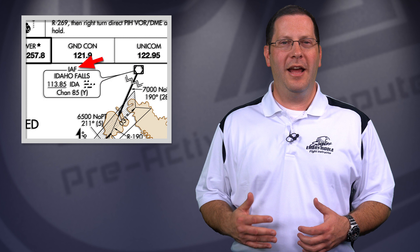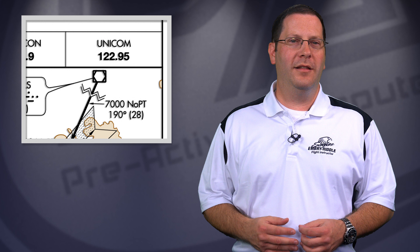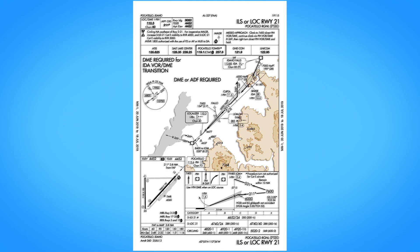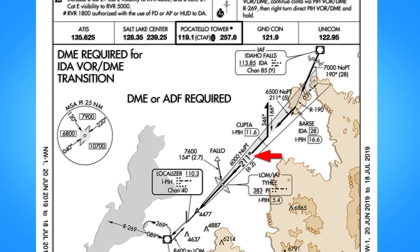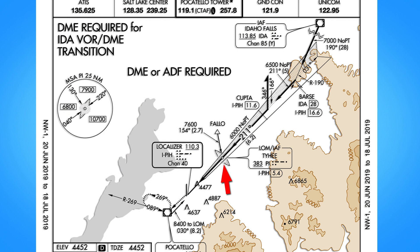Every instrument approach begins at an initial approach fix. To begin the approach, look for an initial approach fix labeled IAF. Sometimes an approach has more than one. From this point, a thick black line indicating a published segment is drawn through each point of the approach down to the missed approach point. Looking at the ILS 21, there is an initial approach fix at the Idaho Falls VOR that transitions you to the localizer course, which then goes until the missed approach point where the line becomes dashed. The locator outer marker is also an initial approach fix, for aircraft approaching from the opposite direction.